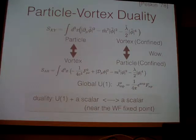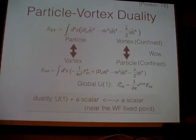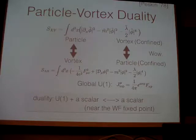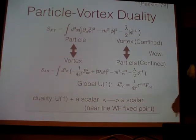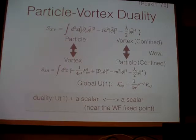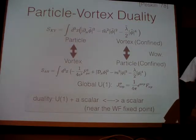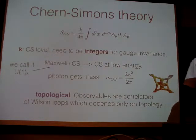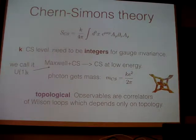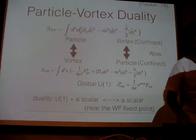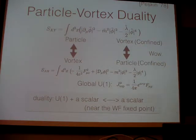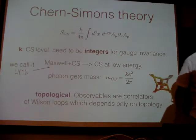For the confined case, the potential is logarithmic — it's a log potential between vortex and anti-vortex, like typhoon and anti-typhoon put together. So this is just to say that three dimensions are peculiar: two very different theories describe the same physics.